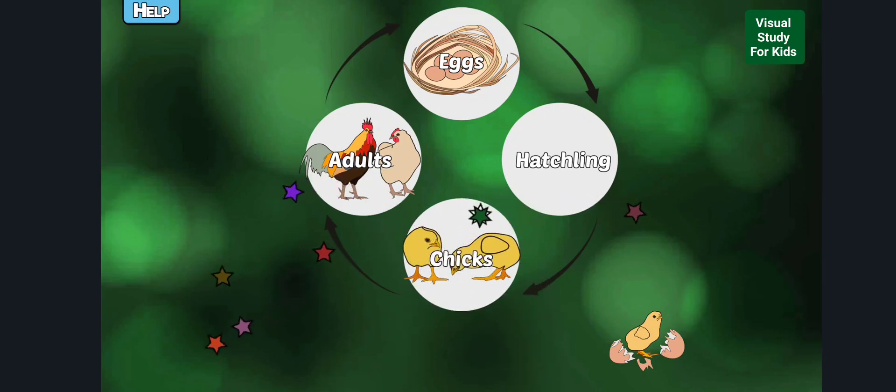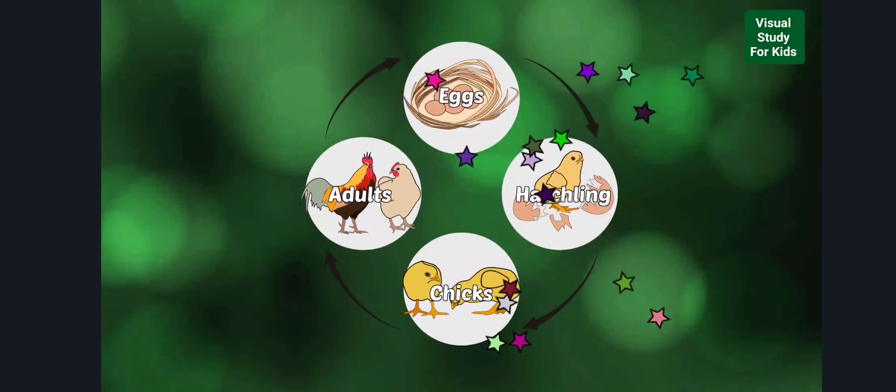Baby chicks grow very fast. Young females are called pullets and young males are called cockerels. When it is time for it to hatch, the baby chick will peck holes in the shell.